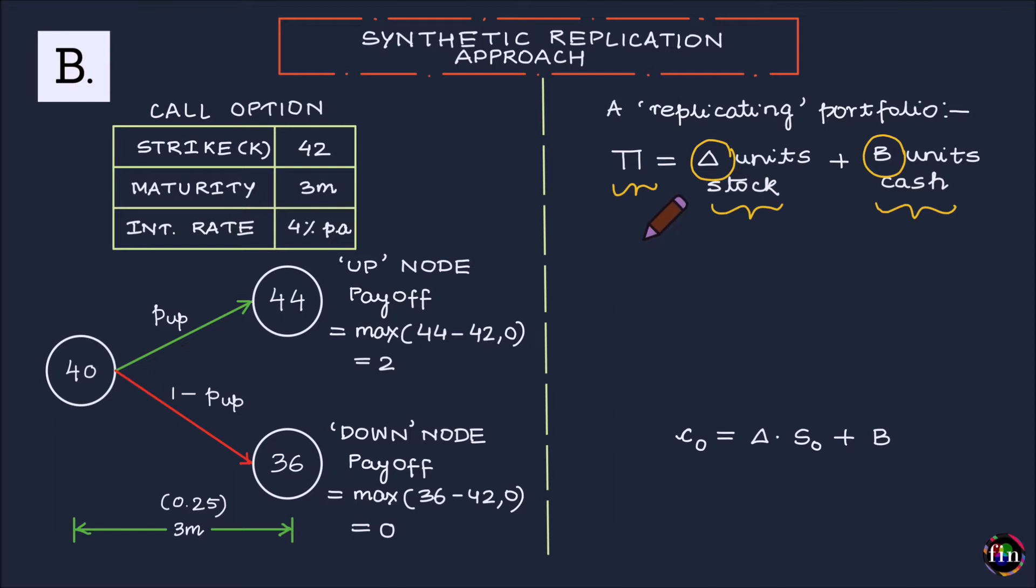Essentially there are two governing equations which can help me find out the delta and the B. Number one, the value of my replicating portfolio in the up node which I know is delta times 44 plus B units of cash as of this node would have become B times e to the power 0.04 times 0.25. Cash will grow at the risk-free rate of interest. So my governing equation is that the value of my replicating portfolio in the up node should be equal to 2.